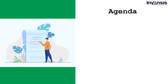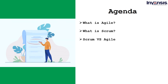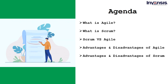We will start our session by first understanding what Agile is and what Scrum is. Then we will look at the key differences between Agile and Scrum. Moving ahead, we will understand the advantages and disadvantages of Agile and Scrum. Finally, we will wrap up this session by concluding with which methodology one needs to move forward with.